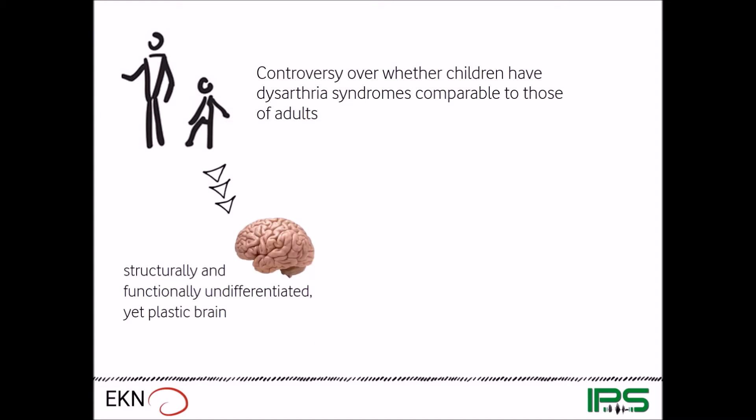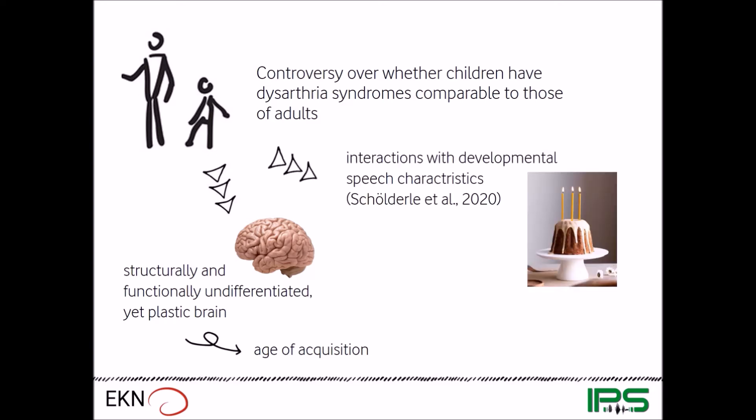First, in children with neurological conditions, brain damage affects a structurally and also functionally undifferentiated but also very plastic brain. So different reorganization processes may be effective in children, leading to a specific manifestation of the speech impairment. In this case the age of acquisition would be the crucial factor. The second explanation assumes interactions with developmental factors such as developmental speech characteristics. In previous work we found a large range of developmental speech features in typically developing children, and these features may also shape the clinical picture of childhood dysarthria. So in this case developmental age would be responsible for differences to adults.